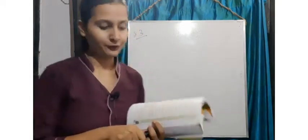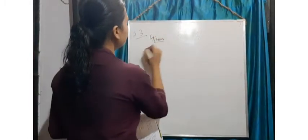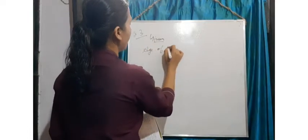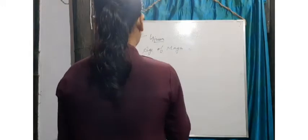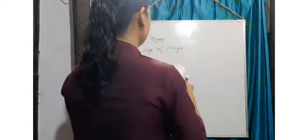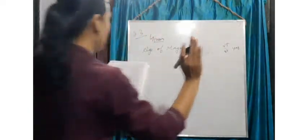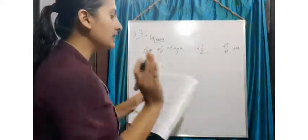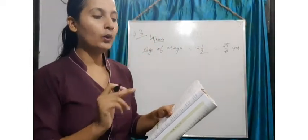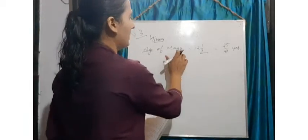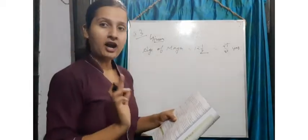So here we have to find the age of Kamal and Kiran. What is given? Maya's age is twelve and a half, that is twenty-five by two years. Now, Kamal's age — Kamal is two and a half years older than Maya, so Kamal is older than Maya by two and a half years.